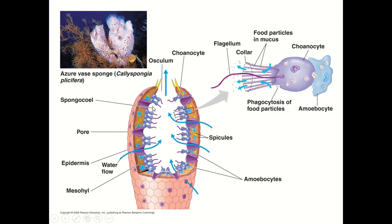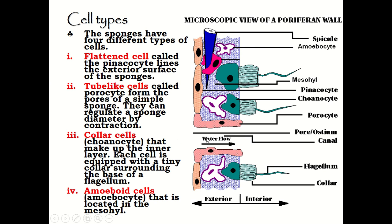The water flows through the pore or ostia and into the spongocoel. The lining of the sponge is formed by the pinacocytes — these flattened cells line the outer surface of the sponge. Next, the tube cells, also called porocytes, form the pore or ostia of a simple sponge and can regulate the sponge's diameter by contraction.